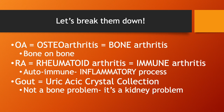Rheumatoid arthritis, on the other hand, is immune arthritis — it's an autoimmune condition that affects the whole body. It's an inflammatory process of the joint, so it's not about the bones, it's about the joint area being inflamed. While it's happening at the location of bones, rheumatoid arthritis is not coming from a bone problem — it's coming from an immune problem.